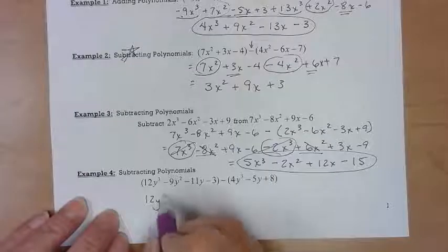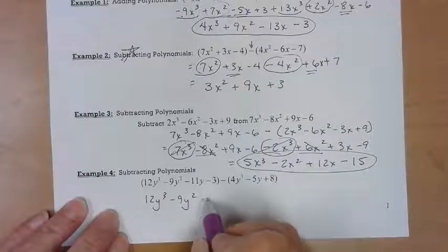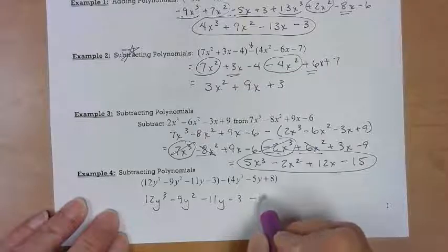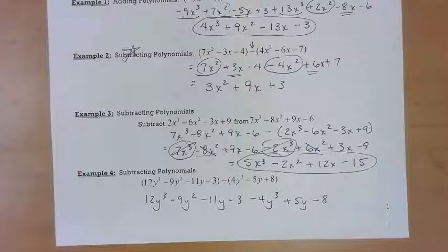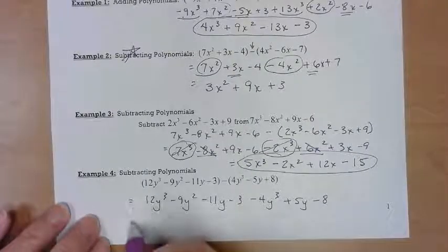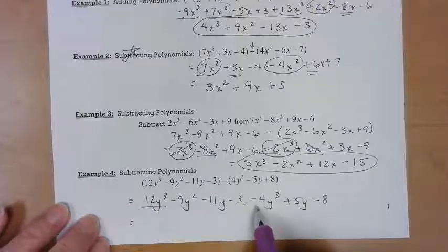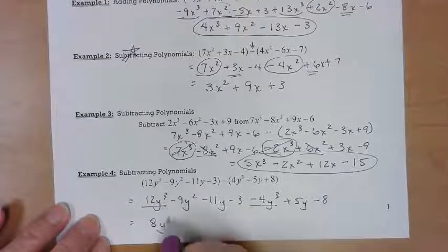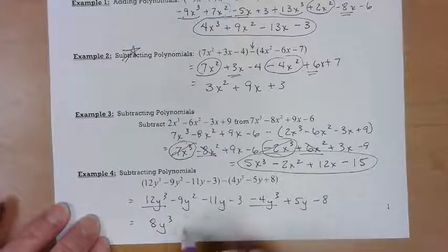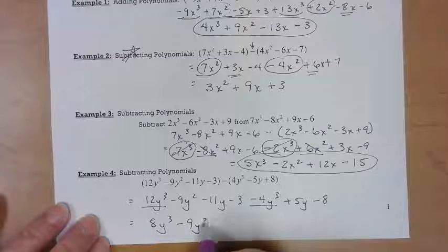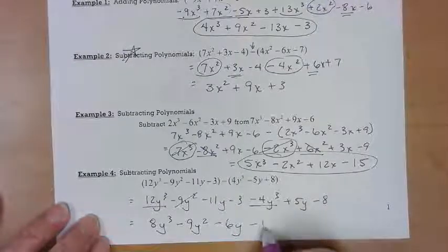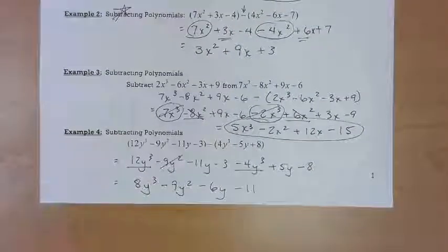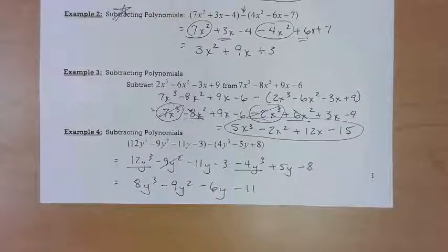I've got more subtraction on here - the addition won't get you, but the subtraction will. You just have to be very careful. Make sure you change all signs and double-check before you start combining, just to make sure. So I've got 12Y cubed minus four Y cubed, give me eight Y cubed. I do not have a nine Y squared back there, so I'm just going to go ahead and rewrite it down. I got negative 11Y plus five Y is minus six Y, minus three minus eight is negative eleven. Okay, so that's it for this particular part. So we need to try and do this homework. Thank you.